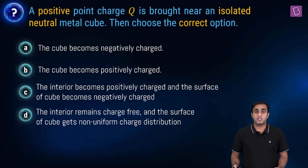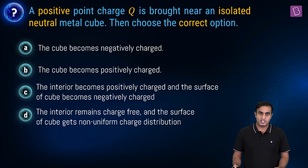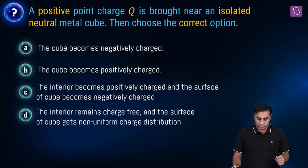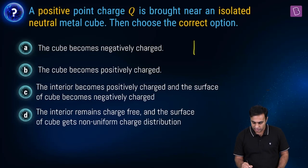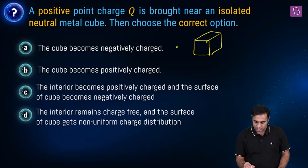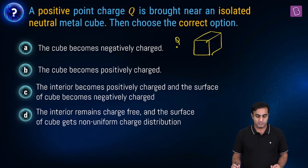Let me help you in visualizing what is given here. We are looking at a positive point charge capital Q which is brought near an isolated neutral metal cube. Here is the neutral metal cube. A positive point charge capital Q is brought near this.